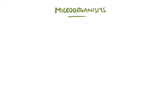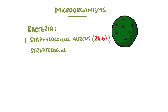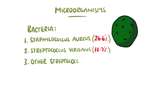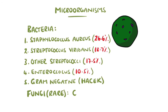The infection is usually bacterial, and the most common causative microorganism varies by country, generally between Staphylococcus aureus and Streptococci. From recent study averages, Staphylococcus aureus is present in around 26.6%, Streptococcus viridans species in 18.7%, followed by other Streptococcus species at 17.5% and Enterococcus in 10.5%. These make up over 80-90% of causative agents, with the remainder being gram-negative bacteria, including the HACEK group, or fungi like Candida albicans.